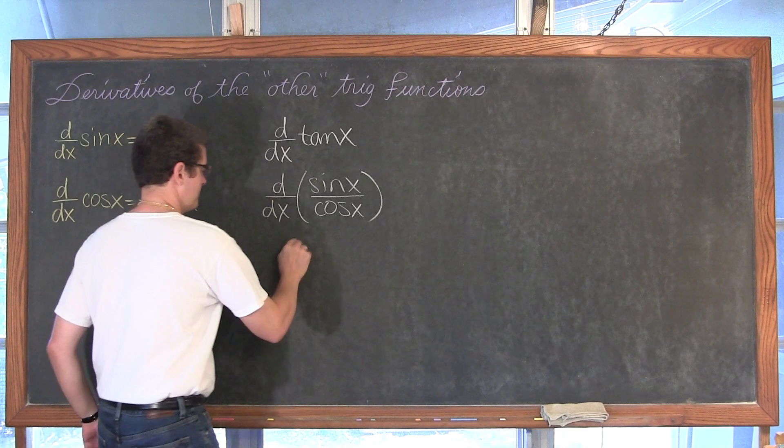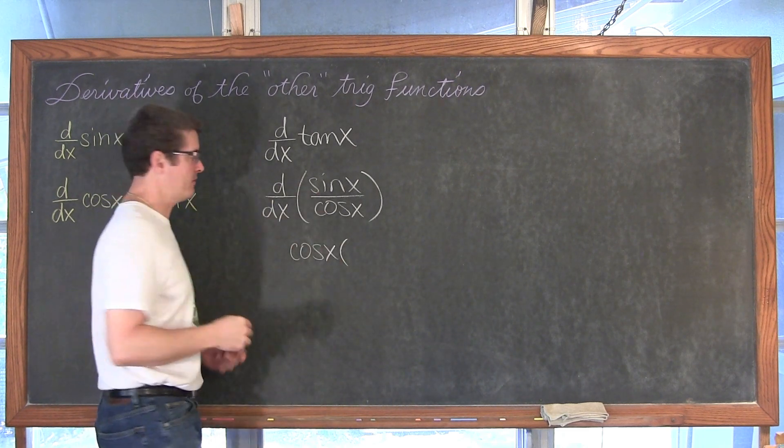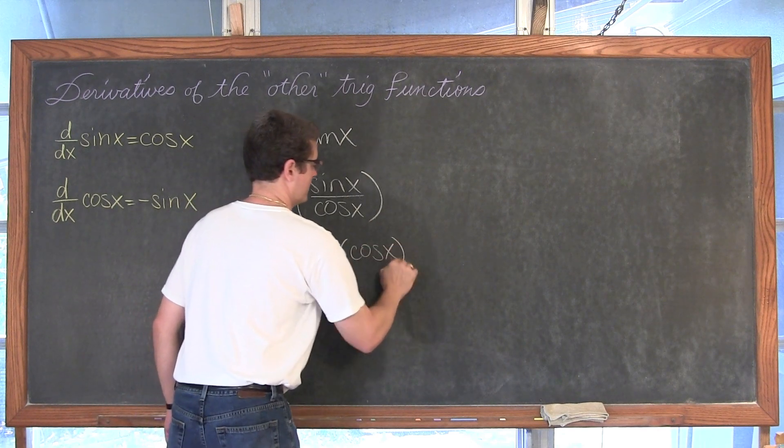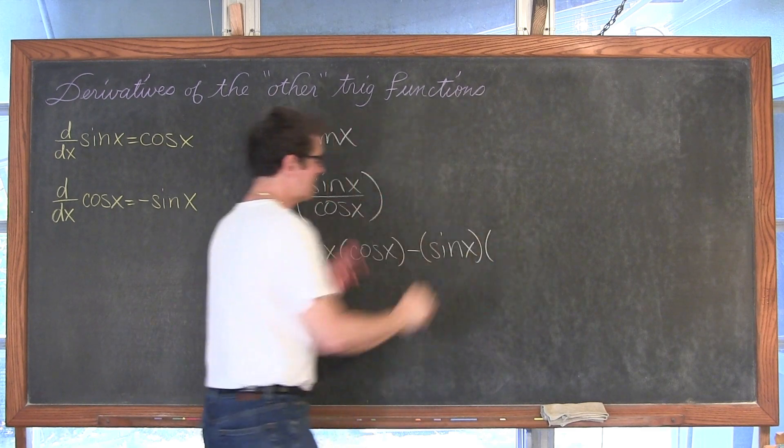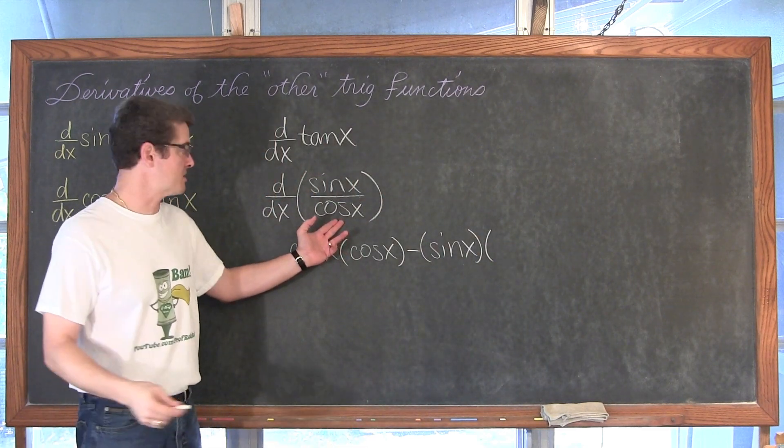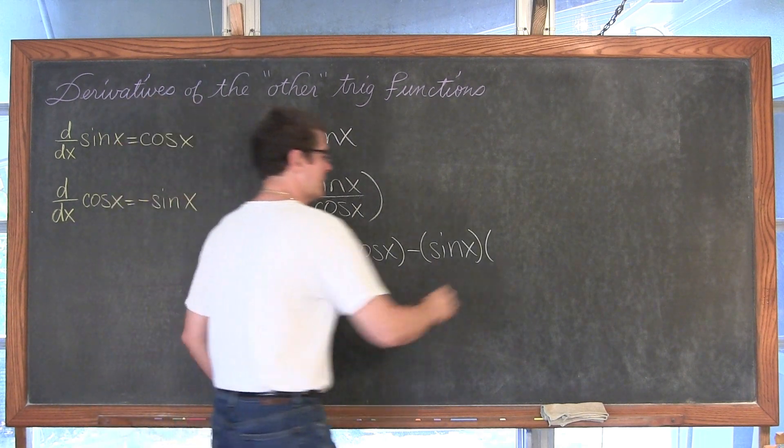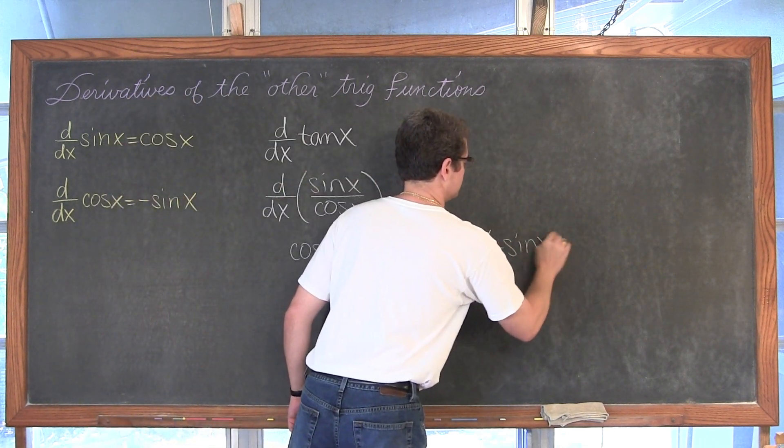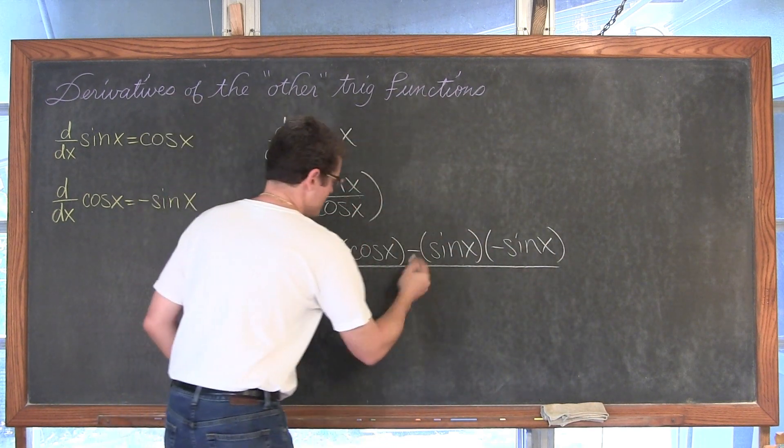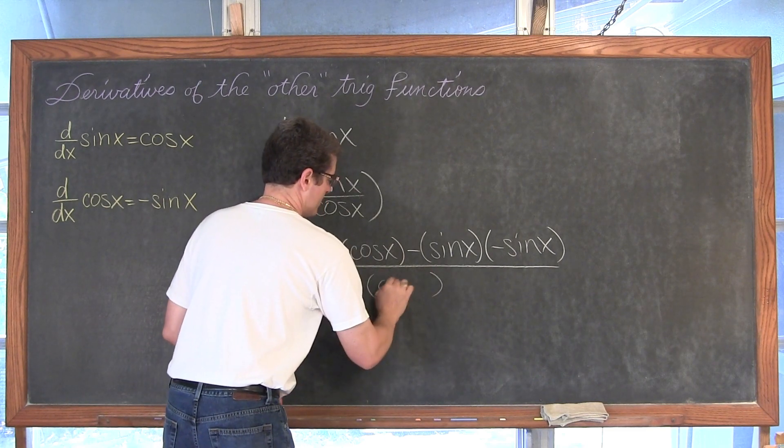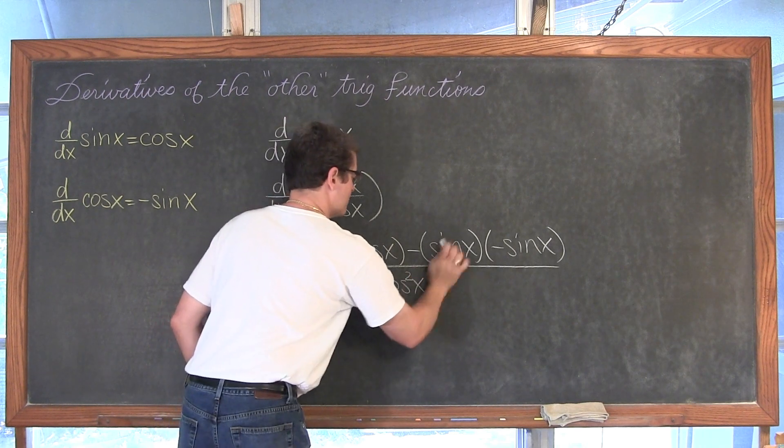That is going to be the denominator times the derivative of the numerator. The derivative of sine is cosine minus the numerator times the derivative of the denominator, which is going to be the derivative of cosine with respect to x of cosine of x is negative sine x. All over the denominator squared, which you can write as cosine x squared or you can write cosine squared of x.